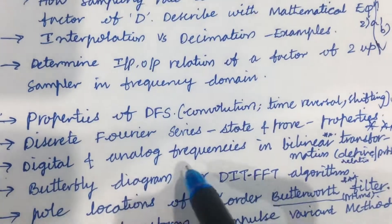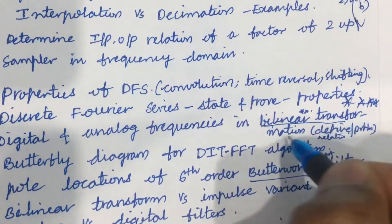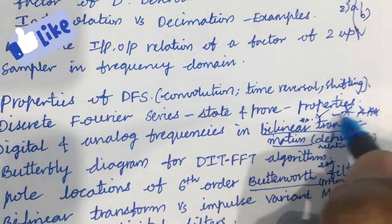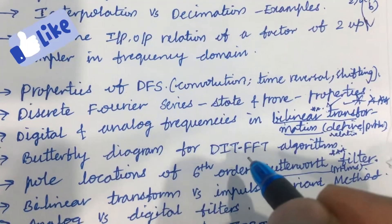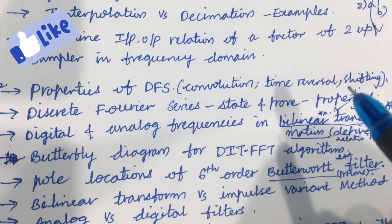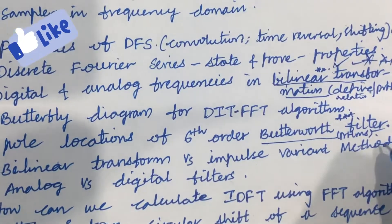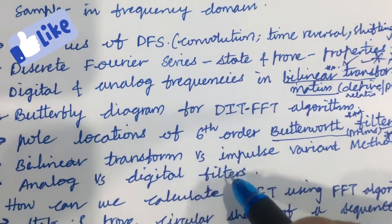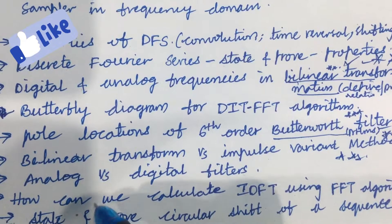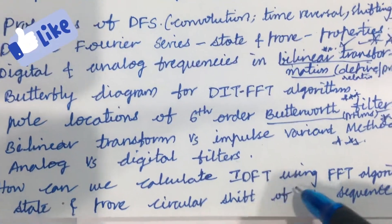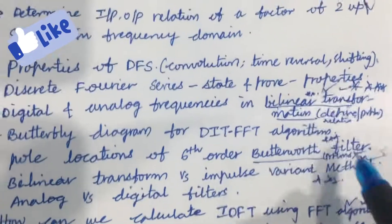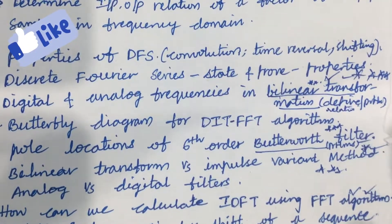Digital and analog frequencies in bilinear transformation — you are supposed to work out this for sure. Derivations or problems related to bilinear transformation are also a gunshot question. The butterfly diagram for the DIT-FFT algorithm is also a very important gunshot question, and from the second unit you are going to get 30 marks, meaning two questions. Pole locations of a sixth-order Butterworth filter and related problems are important. Bilinear transform versus impulse invariant method may be asked for seven marks. Differences between analog filters and digital filters, how to calculate IDFT using the FFT algorithm, and circular shift of a sequence are also key topics. From these concepts, you will be getting questions two and three for sure.